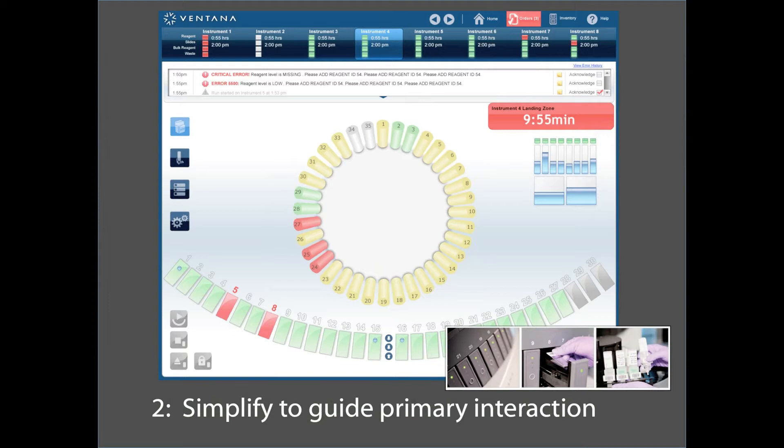In the software that I was just describing that was controlling an instrument for staining tissue samples, there were really two big things that went on when the user was using the software. One was around the bottom were up to 30 different tissue samples that were on slides that had to be removed and added in as they were completed and started. And the other one was a carousel of about 35 different reagents that were used in various protocols to stain for different types of cancer.